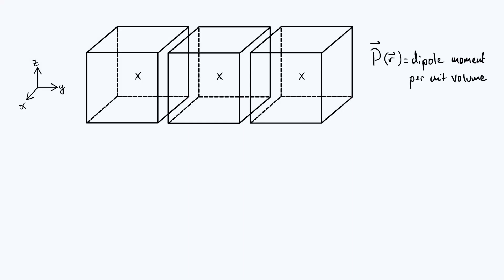Hi everyone, in today's video we're going to talk about how a non-uniform polarization in a dielectric material can give rise to a volume density of bound charge and will derive an equation that links that volume density of bound charge to the polarization vector.